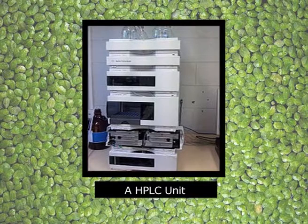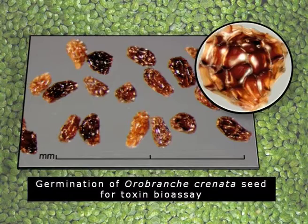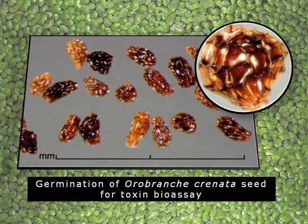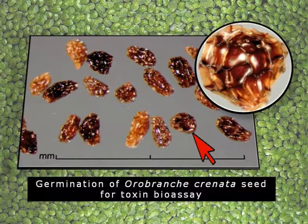There are different ways by which we can see the effect of toxin — in scientific terms, a bioassay of toxin. Ideally the toxin should be purified and characterized by HPLC, or high performance liquid chromatography. After which, when the toxin is concentrated it can be applied on germinating seeds, and depending upon the number of seeds which cannot germinate we can easily determine the impact of toxin. For example, in germination of Orobanche crenata seed, specific seeds are losing the power of germination because of the toxin.